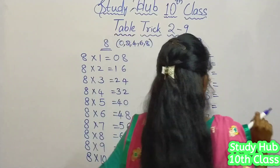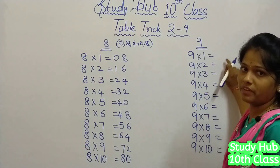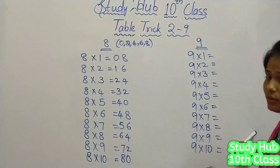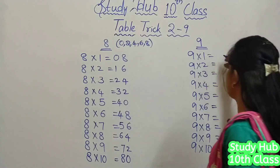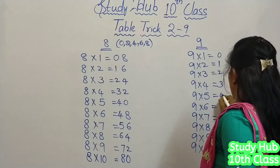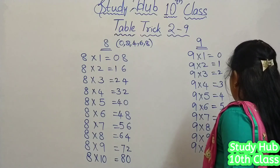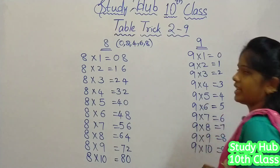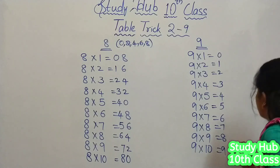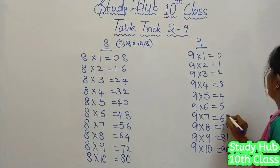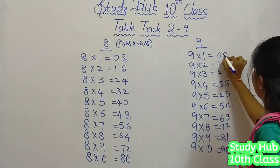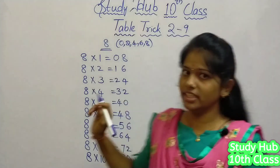And coming to the 9 times table: for writing it, we write the digits from 0 to 9 from top to bottom — 0, 1, 2, 3, 4, 5, 6, 7, 8, 9 — and for the ones place we write them in reverse order, from 9 down to 0: 9, 8, 7, 6, 5, 4, 3, 2, 1, 0. So this is the 9 times table.